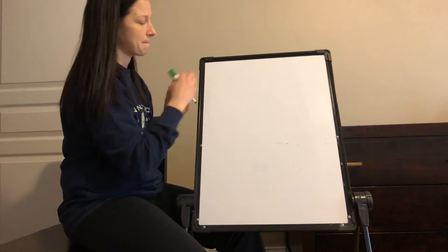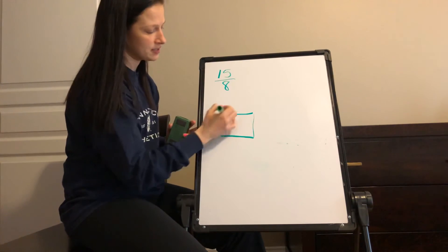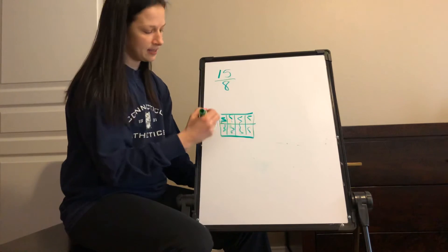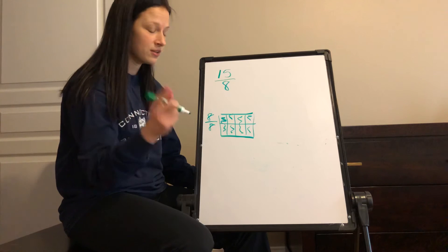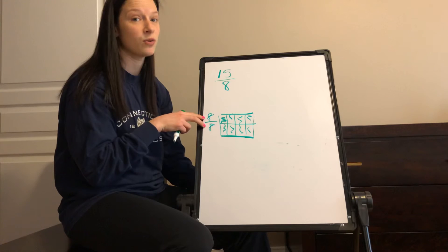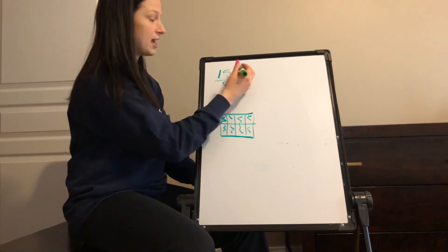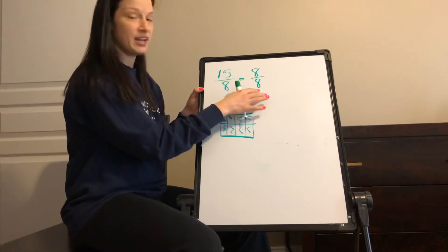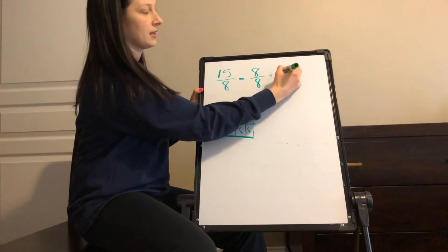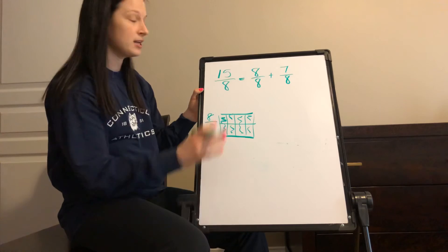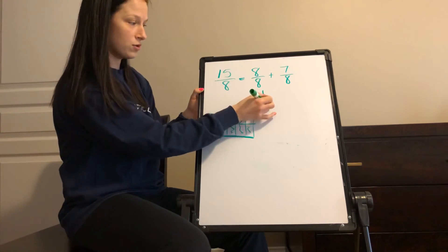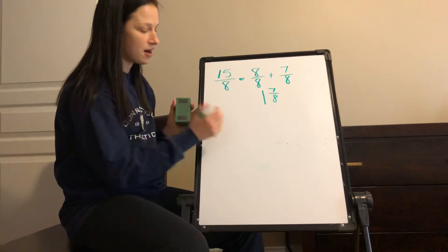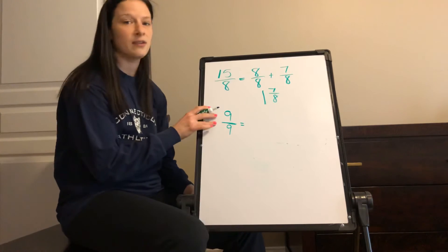The other answer we had was fifteen-eighths. When we're thinking about eighths, one whole means eight-eighths. Something you should all recognize: when the numerator and denominator are the same, that is always one whole. So students think: how many groups of eight-eighths go into fifteen-eighths? They take out one group of eight-eighths — one whole — and figure out what's left over. They get one whole and seven-eighths.